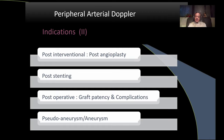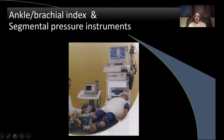There is another group of patients where an intervention has been done and you are asked to evaluate — this is becoming more common, like post-operative, post-stenting, or post-bypass grafts. We'll see some examples. There is also another group like evaluating sugar aneurysms and aneurysms, but we won't go into that today.